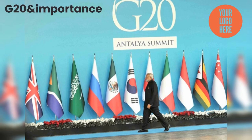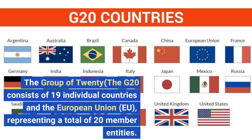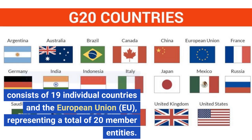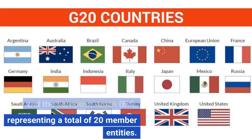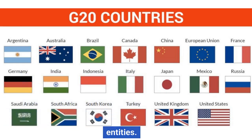G20 and Importance. The Group of 20, the G20, consists of 19 individual countries and the European Union, representing a total of 20 member entities.